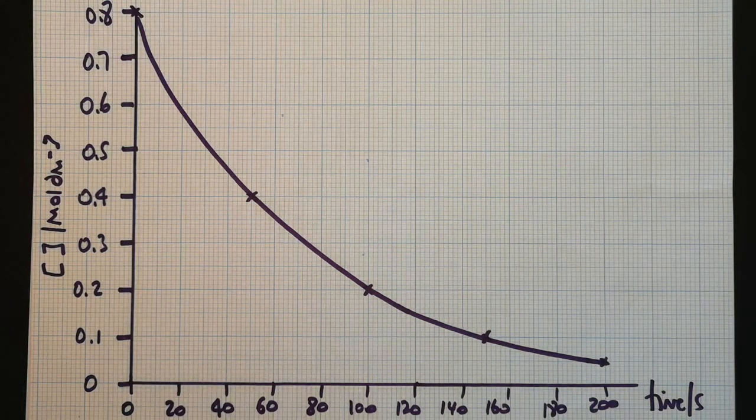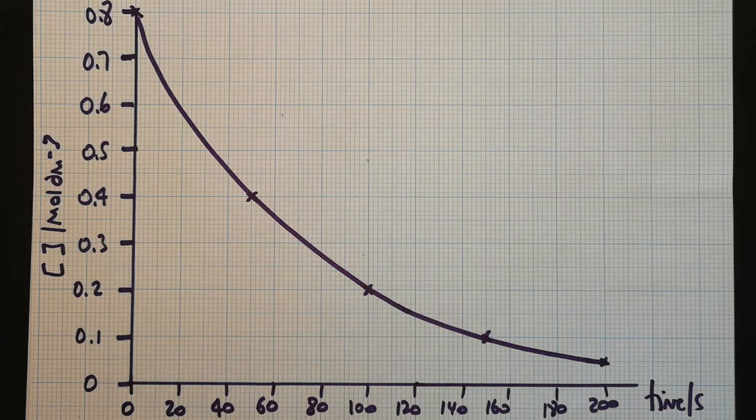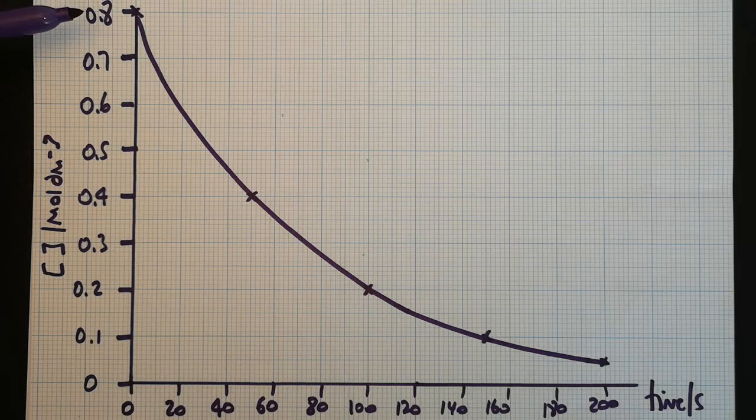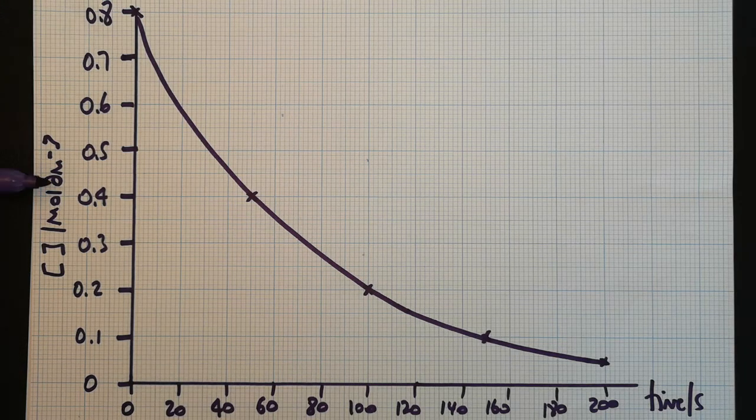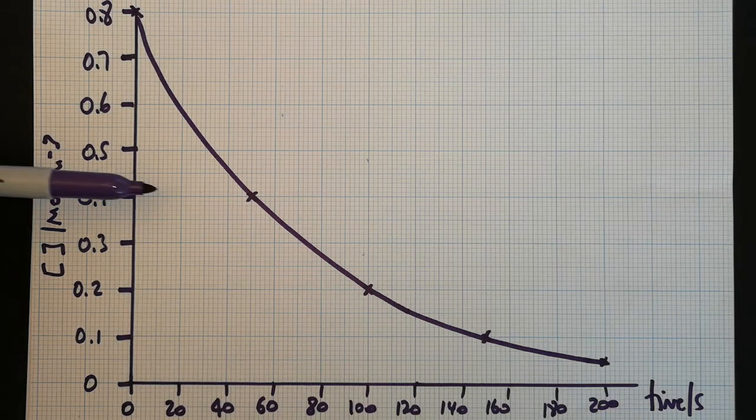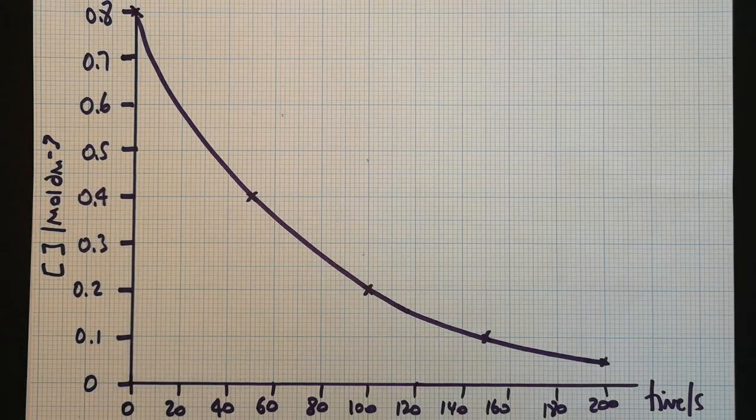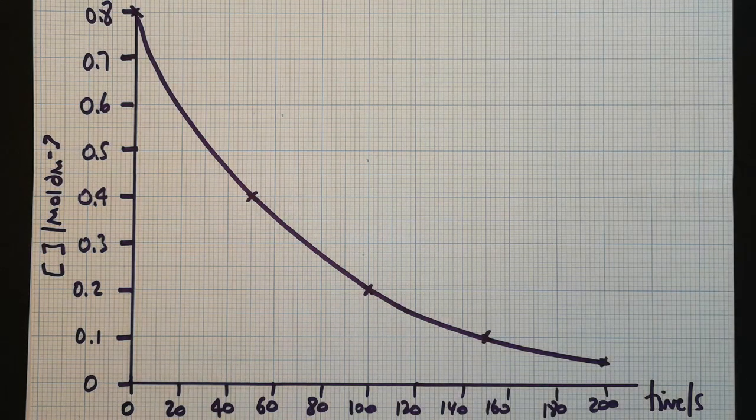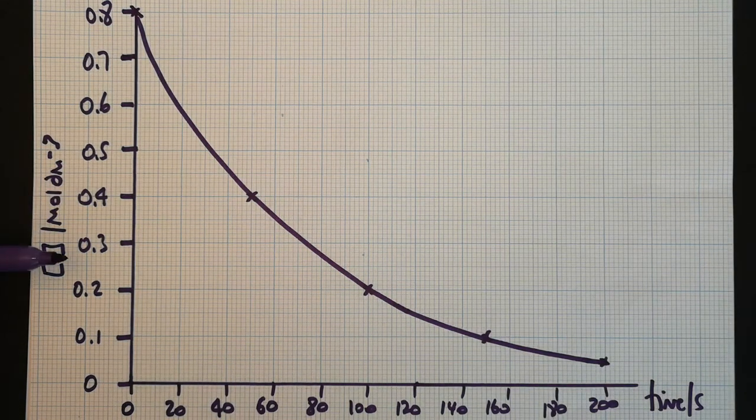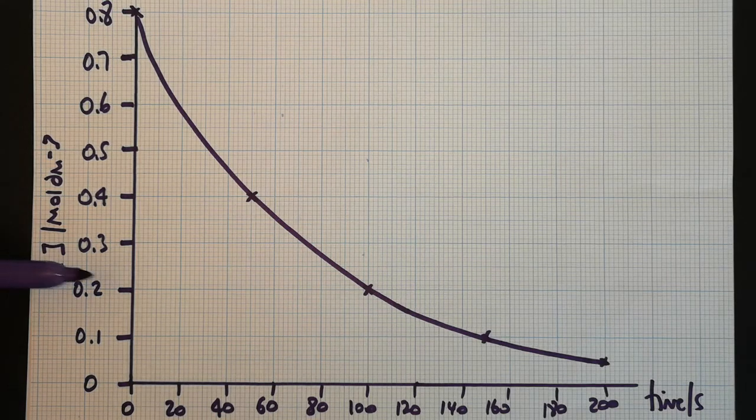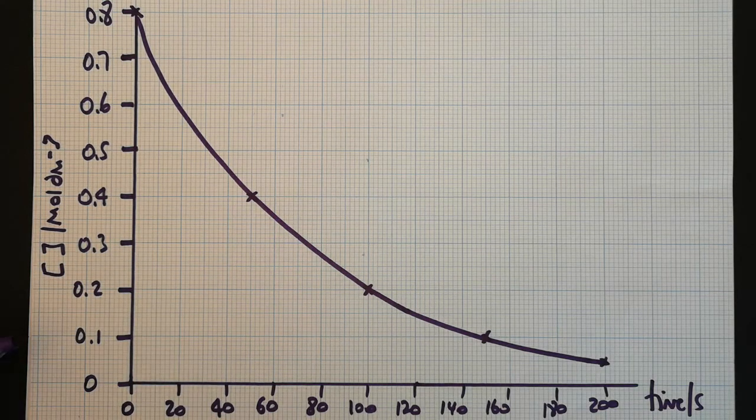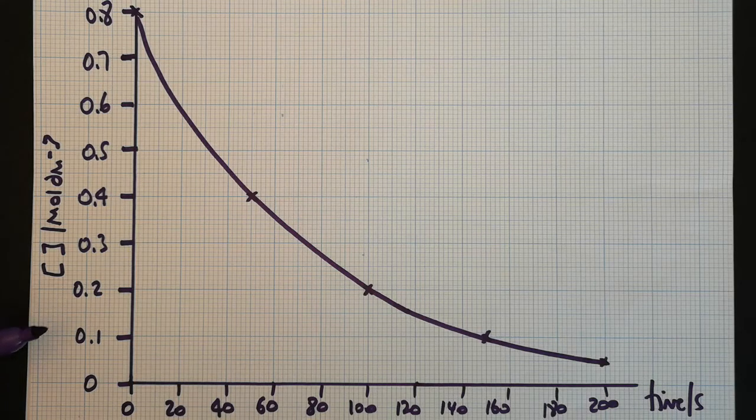Now the three points that I've written on there should give you a hint as to what's coming up next. If we look at the time taken for the concentration to exactly halve from 0.8 to 0.4, that takes 50 seconds. If you then look at how long it takes to halve again from 0.4 to 0.2, it's exactly 50 seconds again. And then how long does it take to halve from 0.2 to 0.1? Exactly 50 seconds again.